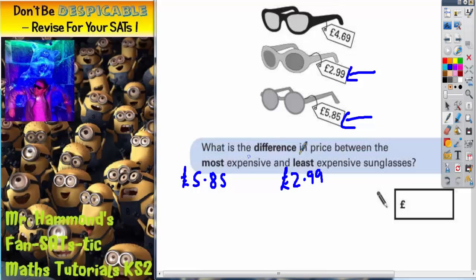Now to find the difference, any time you need to find the difference between two numbers you do a subtraction. The easiest thing to do is use the column method, so it's going to be £5.85 subtract £2.99.